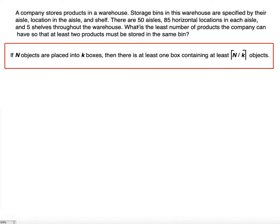We have to understand the last phrase: what is the least number of products the company can have so that at least 2 products must be stored in the same bin? Two products stored in the same bin — so bin is pertaining to the box in this case, and products pertain to the objects. So the products are the objects and the bin is the box.